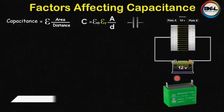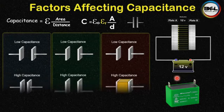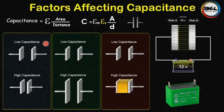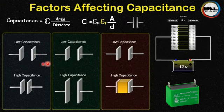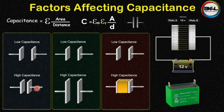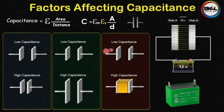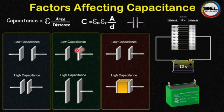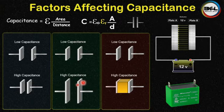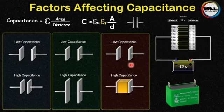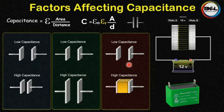Let's have a quick revision. The capacitance of a capacitor is inversely proportional to the distance between the plates: more distance means lower capacitance, and lower distance means higher capacitance. Regarding area: when the area is less the capacitance is low, and when the area is large the capacitance is high. For the third factor — the material between the plates — with air the capacitance is lower, and by inserting any type of dielectric material the capacitance increases.